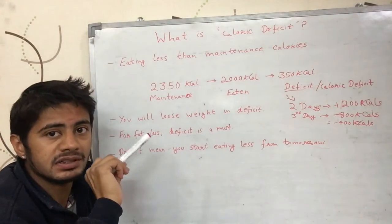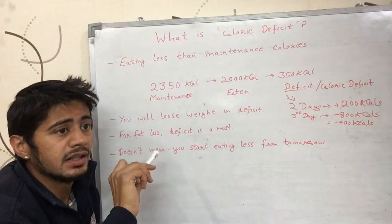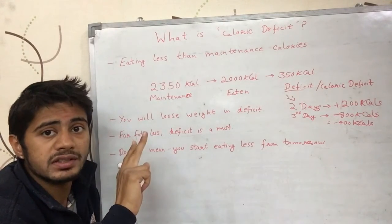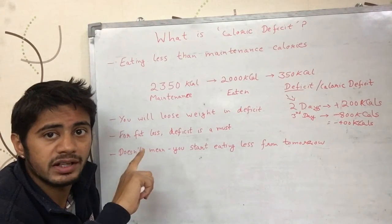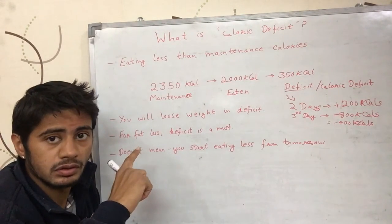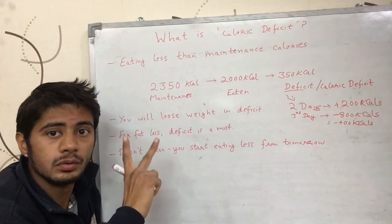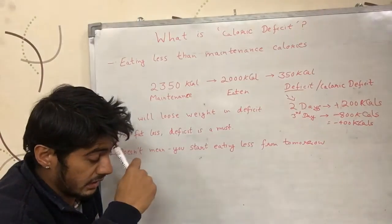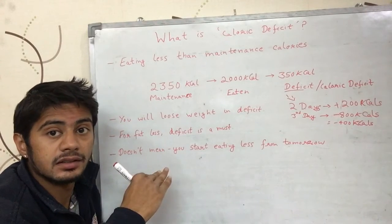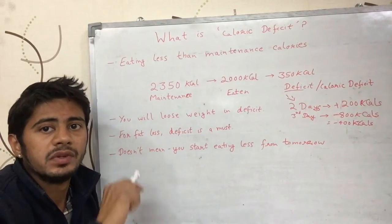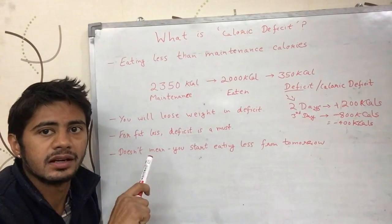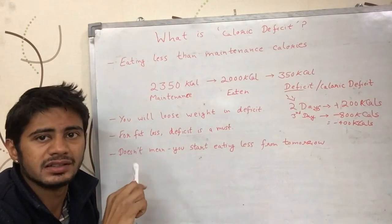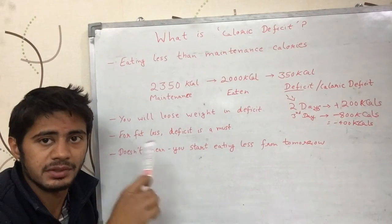As I have given many examples in the video where I explained maintenance calories, similar examples are related to caloric deficit. Let's say for two days you were eating 200 calories more than your maintenance calories each day, so on a total you ate 400 more calories in two days. On the third day you ate 800 less calories than your maintenance calories. Then we are in a total deficit of 400 calories across the whole three days. That is just an example to tell you that the deficit can be calculated across the days.